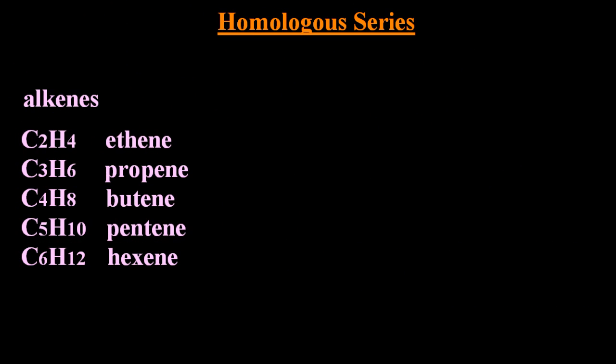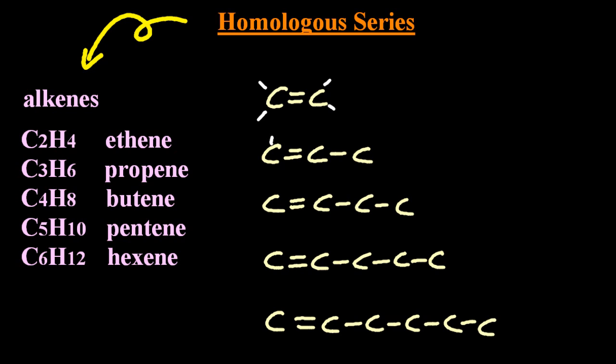So where does the word homologous come from? It means same proportion. And here's a more pedestrian homologous series, the alkenes. Let me draw them out quickly for you. Of course, you'll have to put the hydrogens in.